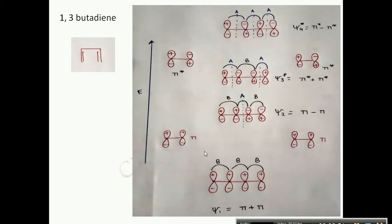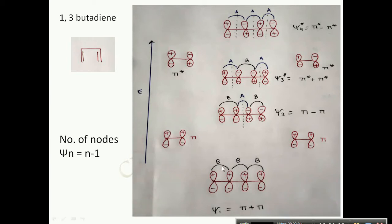Linear combination takes place such that the energy difference between the two combining orbitals is minimum. When two pi bonding orbitals of ethylene combine, they form psi 1 and psi 2 molecular orbitals of 1,3-butadiene. Psi 1 is lowest in energy because it has three bonding interactions between the two ethylene bonding molecular orbitals. Psi 2 is slightly higher in energy because it has two bonding interactions and one anti-bonding interaction.